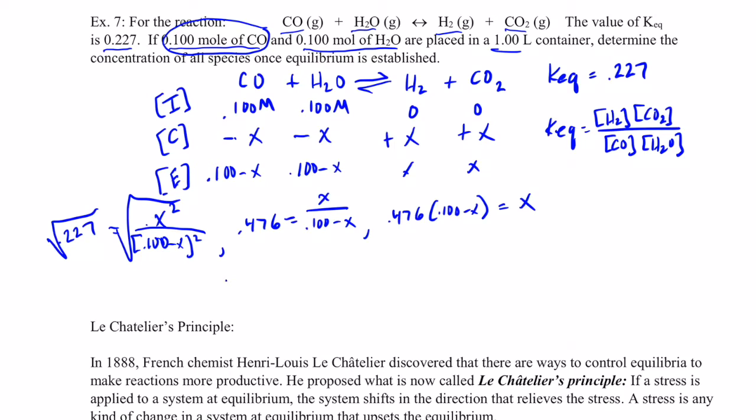So 0.476 times 0.1 is 0.0476. Let's do that down here, 0.0476. And 0.476 times a negative x is a negative 0.476x, and that equals x. Now I'll combine like terms, so I'm going to add 0.476 to both sides.